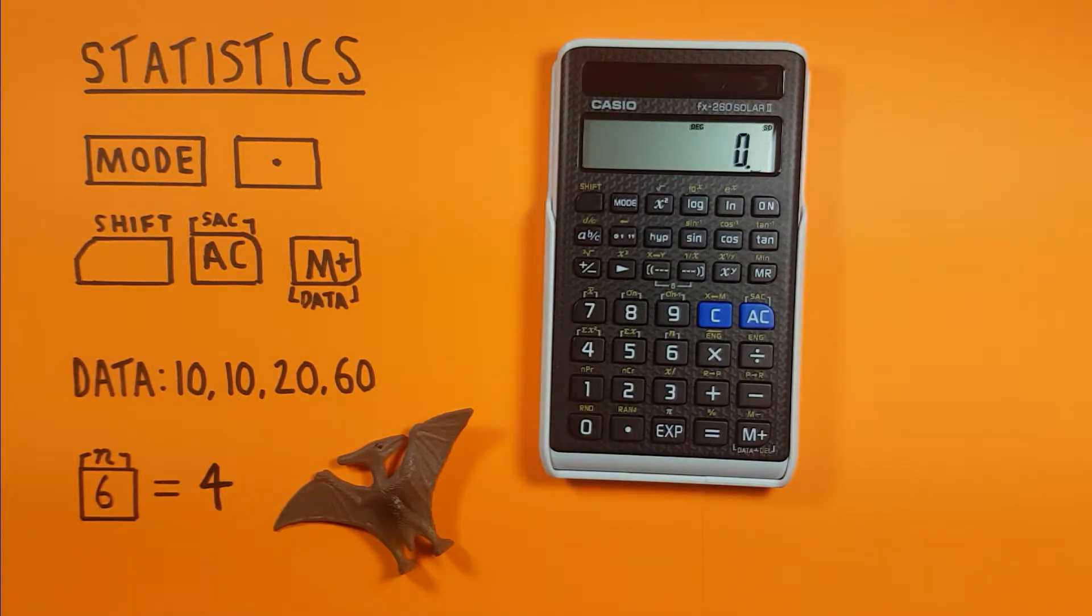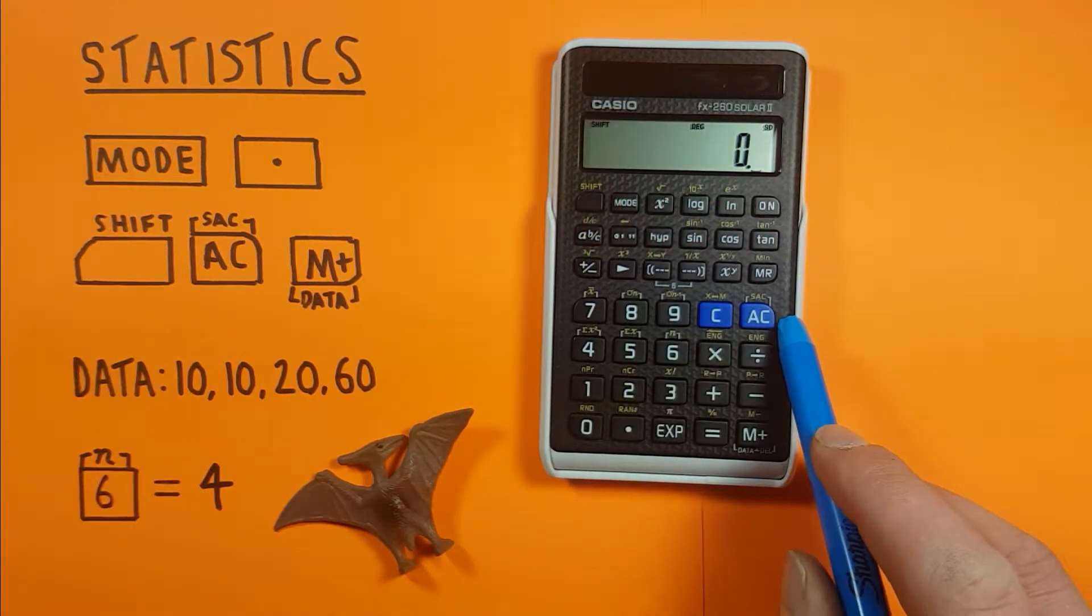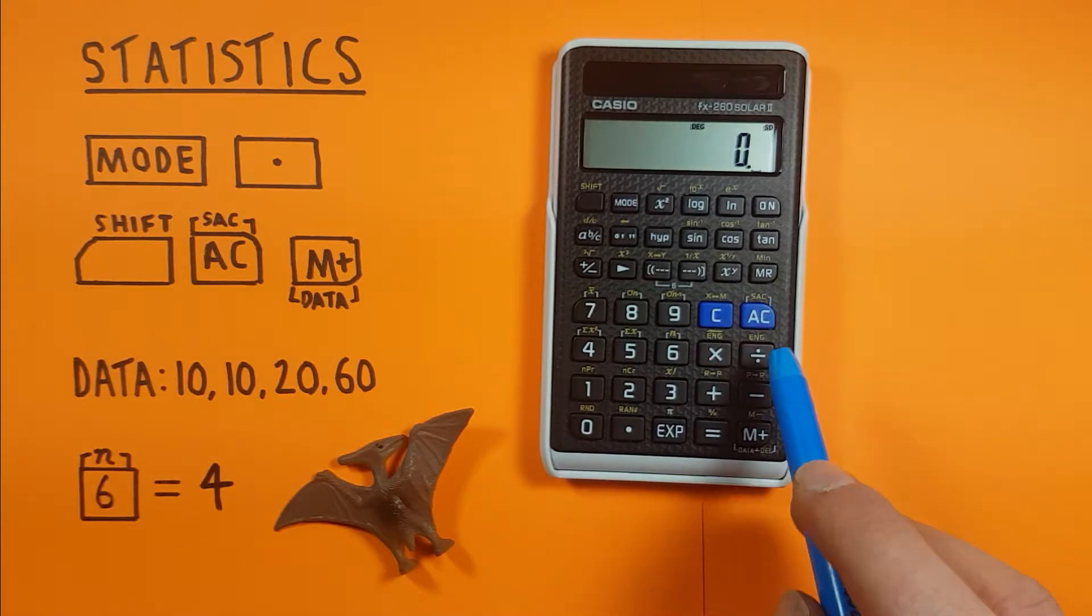Next thing we want to do is clear any old data so that we don't have anything contaminating what we're trying to do. To do this you press shift and then the AC key which will do this SA function. Press that and we're good. We've cleared any old data.